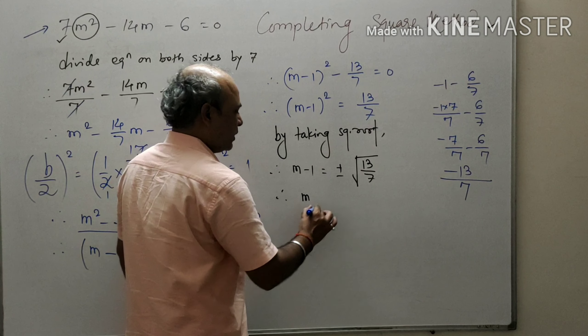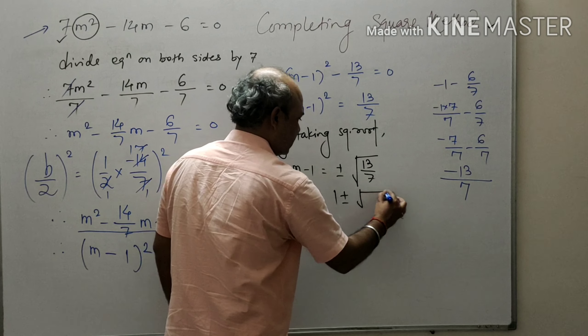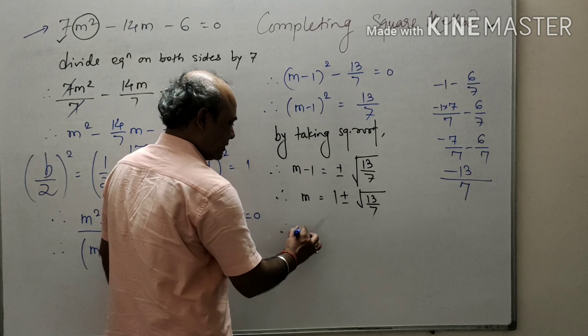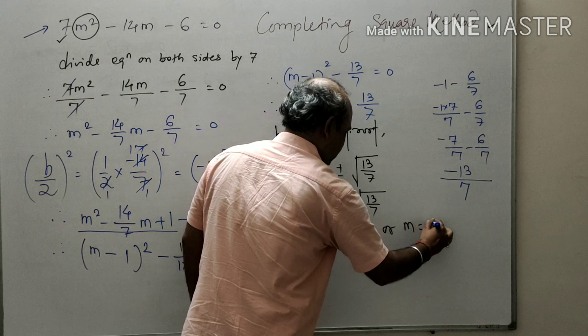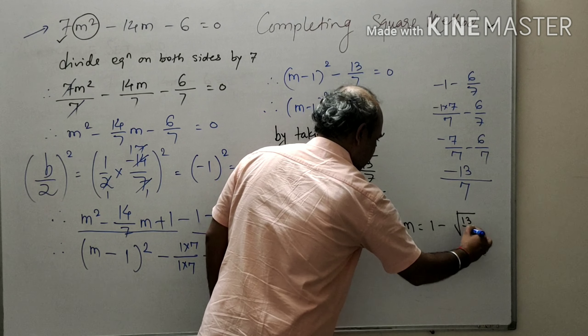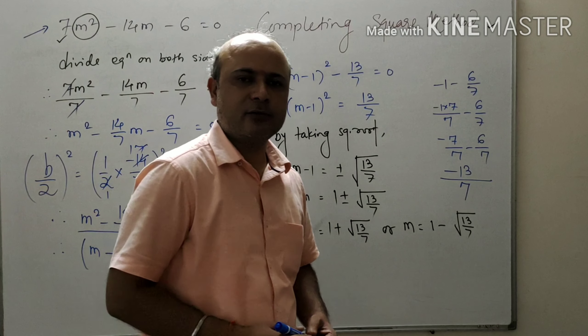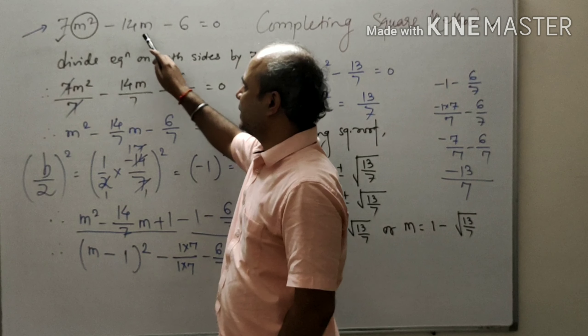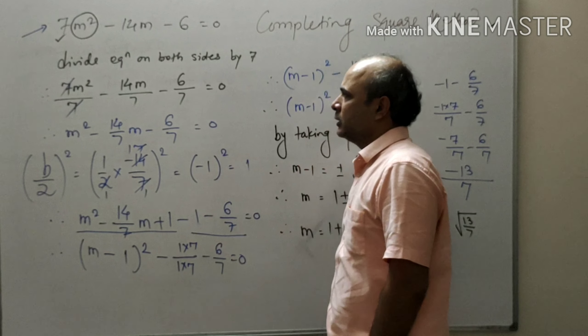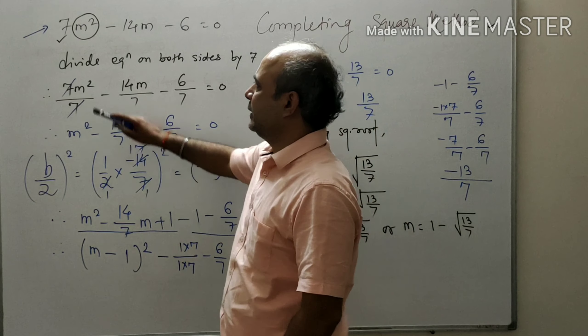Transfer -13/7 to the right-hand side: (m - 1)² = 13/7. Taking square root on both sides: m - 1 = ± √(13/7). Therefore m = 1 ± √(13/7). So m = 1 + √(13/7) or m = 1 - √(13/7).